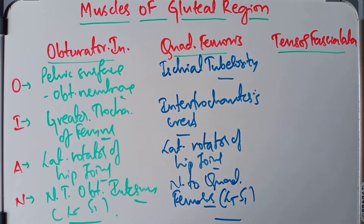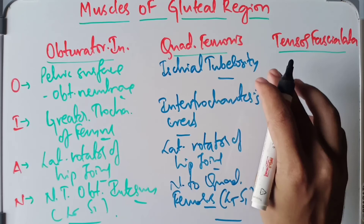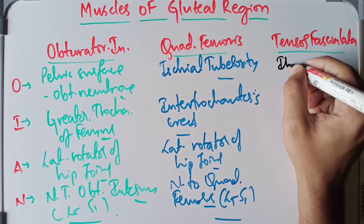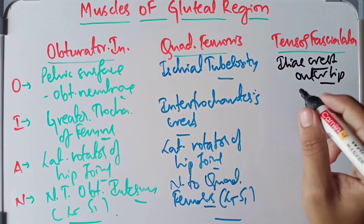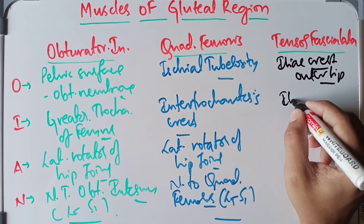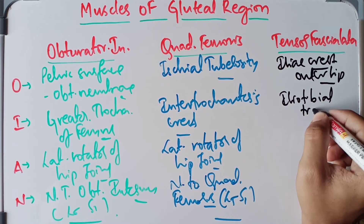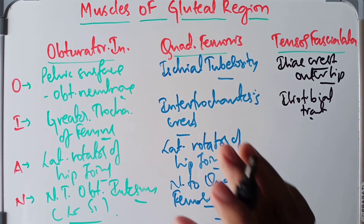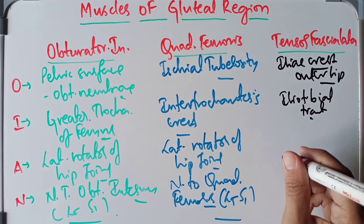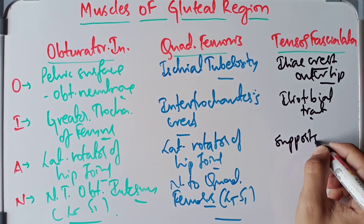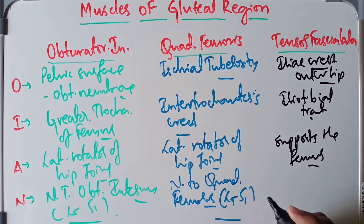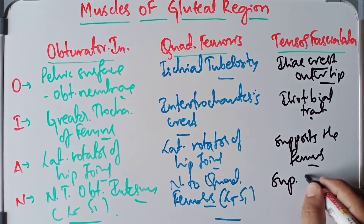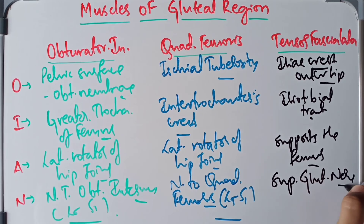Now moving on to the tensor fasciae latae. Its origin takes place from the outer lip of the anterior part of the iliac crest. It is inserted into the iliotibial tract. Its action is to support the femur on the tibia during standing position. The nerve supply is by the superior gluteal nerve.